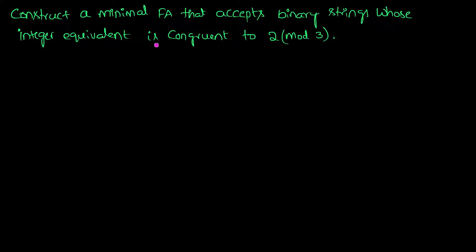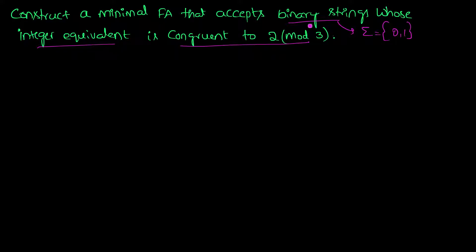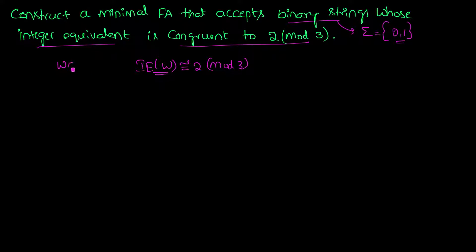Let's see this question, which is a slight modification of the previous question. We need to construct a minimal finite automaton that accepts binary strings whose integer equivalent is congruent to 2 mod 3. The alphabet is zeros and ones, and when we divide the integer equivalent of string w by 3, it should leave a remainder of 2. Such a string will be in our language.